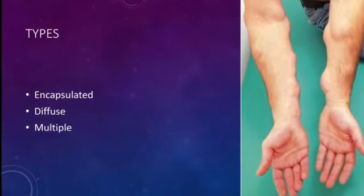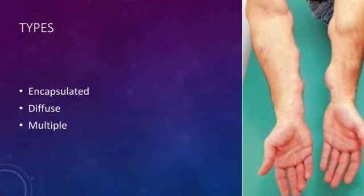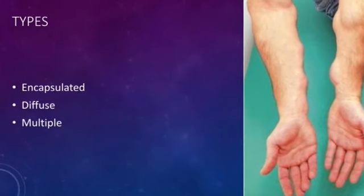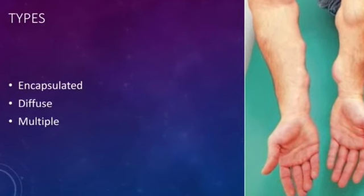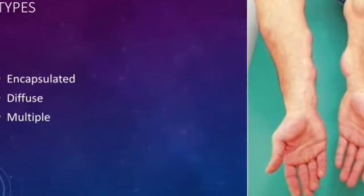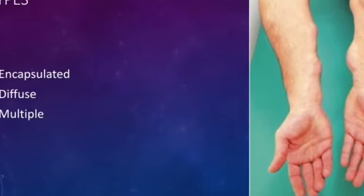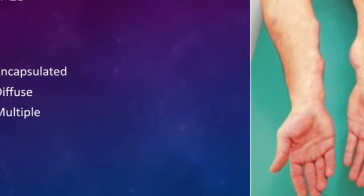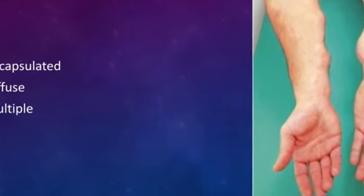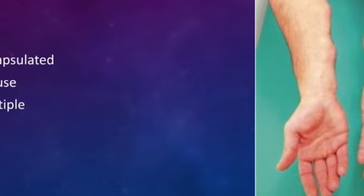Next, we will go through the types of Lipomas. They are encapsulated, diffuse, and multiple. Encapsulated means these Lipomas have a capsule. Diffuse means they do not have a capsule, and multiple means there will be more than one in number.